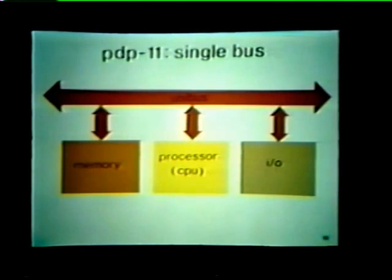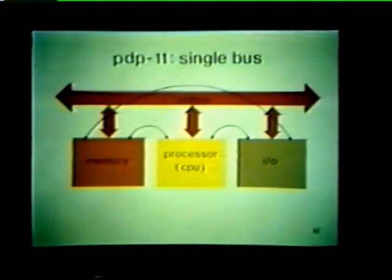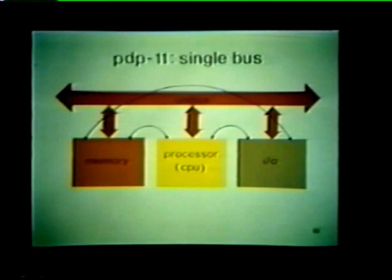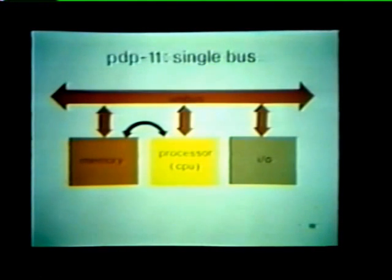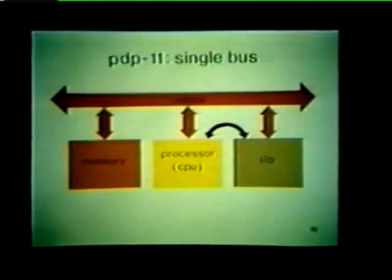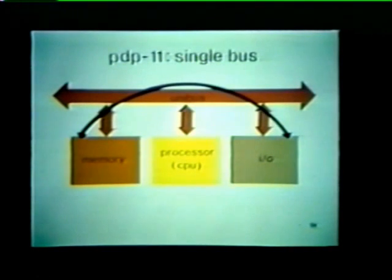The arrowheads placed at each end of the bus indicate that elements can be continually added to the unibus in either direction. Because the unibus is a common path, it is possible for any computer element to communicate with any other element on the bus. The processor can communicate directly with memory, or directly with the I/O device, and vice versa. In fact, certain I/O devices can deal directly with memory at the same time that the processor is busy doing its own job.